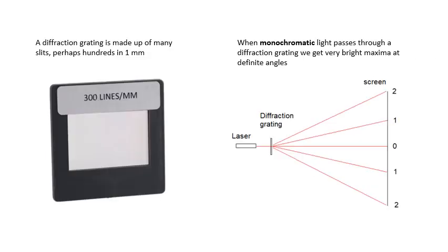This is a diffraction grating. And it's lots and lots and lots of slits. If you look, 300 lines per millimeter. That's a lot of slits. Now when monochromatic light, monochromatic means it's one color, one wavelength,